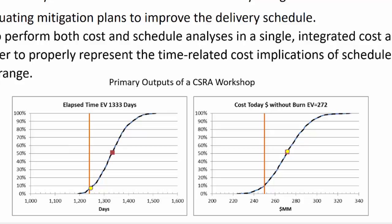Similarly, on the right side is the cost. Here I've shown the deterministic value as being around $250 million, also in the P5 to P10 range. That's what most people experience, because both the schedule and the cost tend to be optimistic when you talk to the subject matter experts and ask them for a deterministic answer. Everything is going to be rosy.